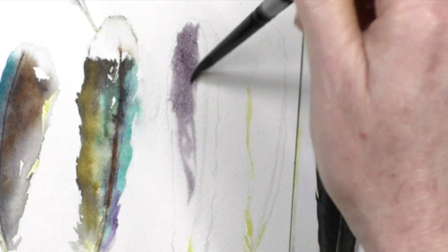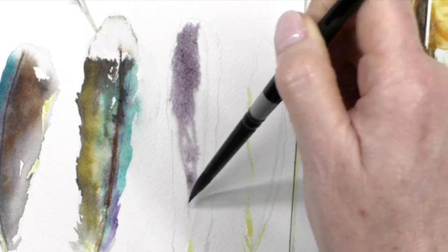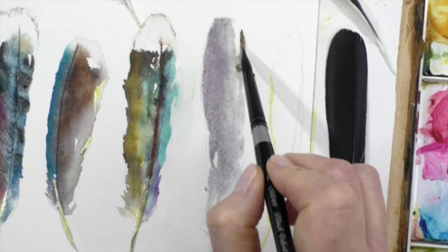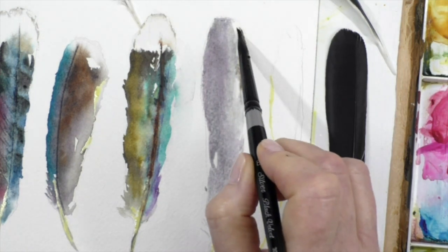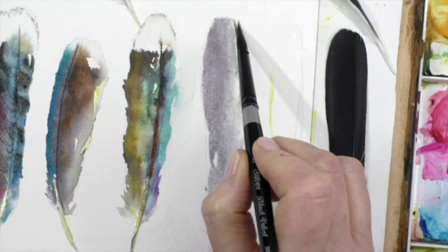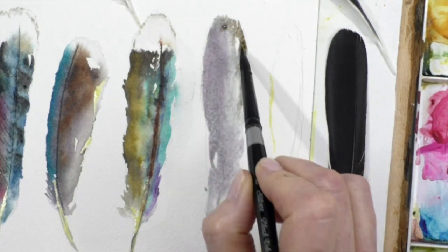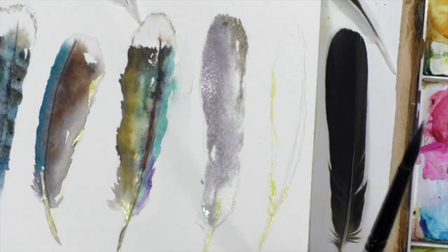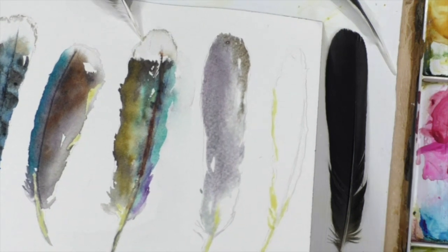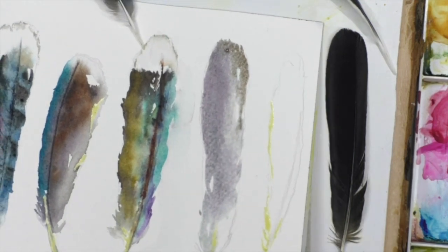So now this is Payne's gray and I am using the feather on the right, the black feather as my reference, as my specimen. Again, this is a feather from my backyard. It's black. I don't think it's a blue jay feather this time, but yeah, we definitely have these black birds coming by. It's pretty cool.